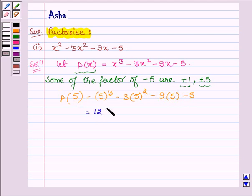5 raised to the power 3 is 125 minus 3. 5 raised to the power 2 is 25 minus 9 into 5 is 45, and thus in the next step we have 125.